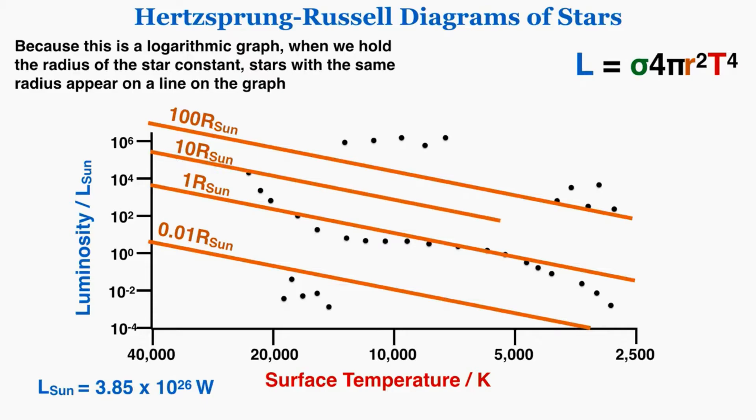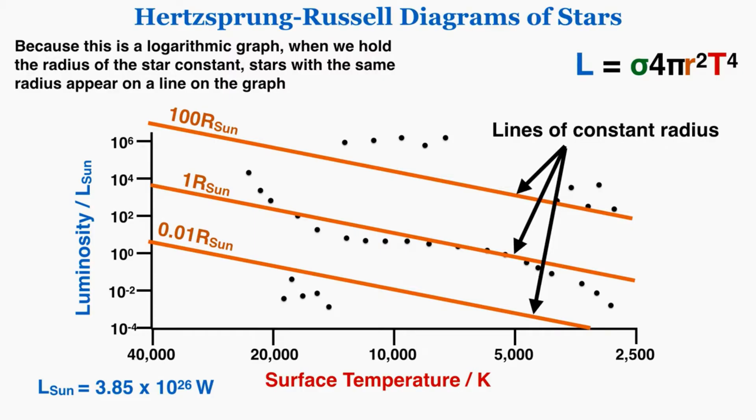As an example between 1 and 100 you could find a line for 10 times the Earth's sun, but we don't want to fill this up completely with lines because we could draw an infinite amount. So I'll just draw a few as an example. We call these lines of constant radius.